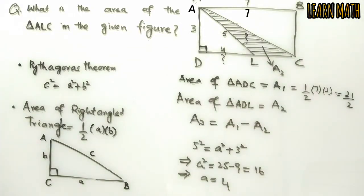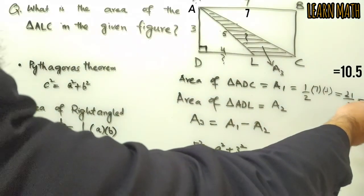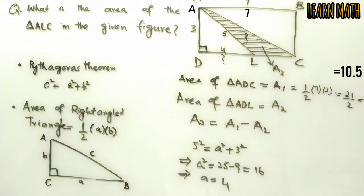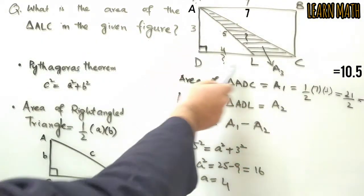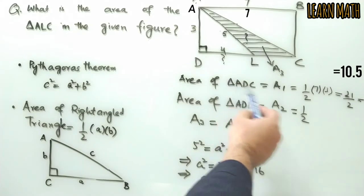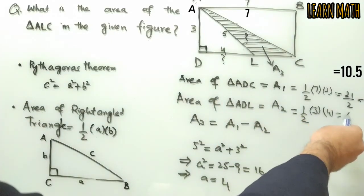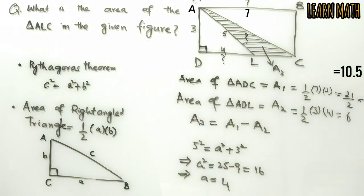The area of triangle ADL will be equal to 1/2 of 3 into 4, which is equal to 6.